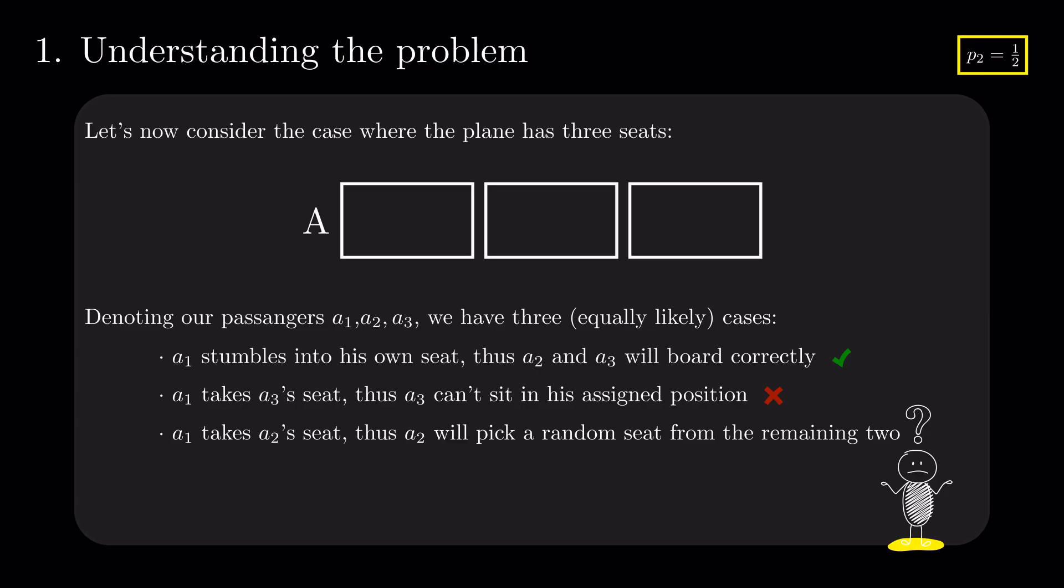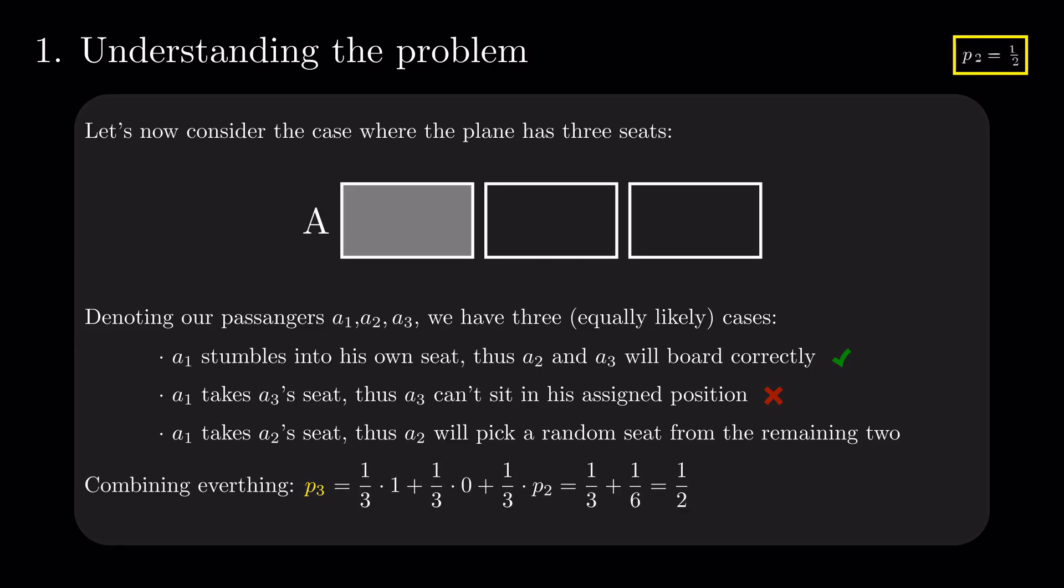If we look closer now and relabel A1's seat with A2's name, A2 is in the same position that the first passenger was in the situation with only two seats, leading us back to P2. Combining everything, we get that P3 is 1 over 2 as well.